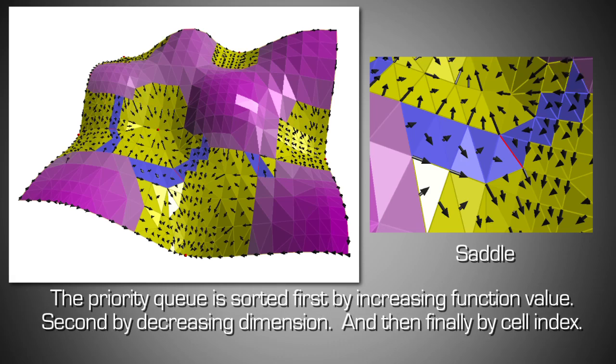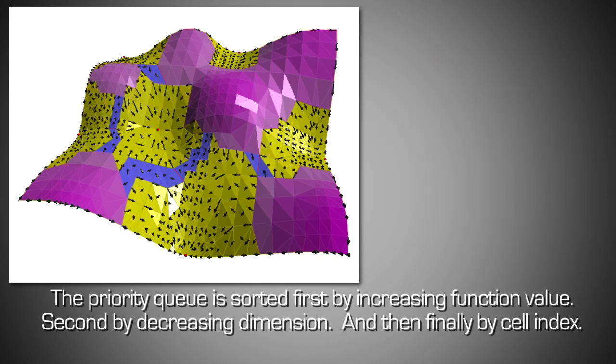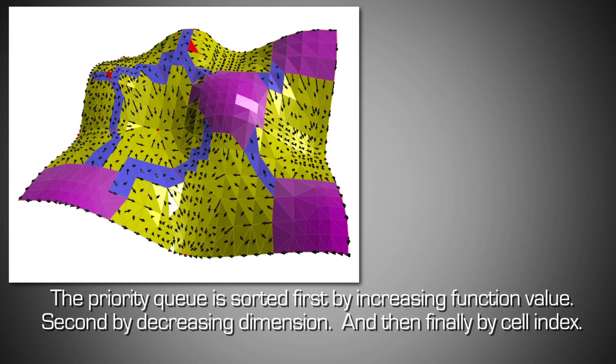The priority queue is sorted first by increasing function value, second by decreasing dimension, and then finally by cell index.